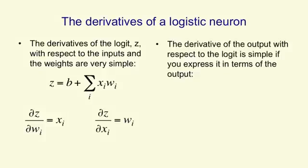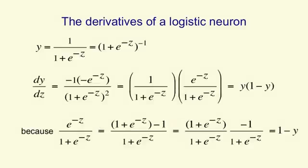The derivative of the output with respect to the logit is also simple if you express it in terms of the output. So the output is 1 over 1 plus e to the minus z, and dy by dz is just y into 1 minus y. That's not obvious. For those of you who like to see the math, I put it on the next slide. The math is tedious but perfectly straightforward, so you can go through it by yourself.